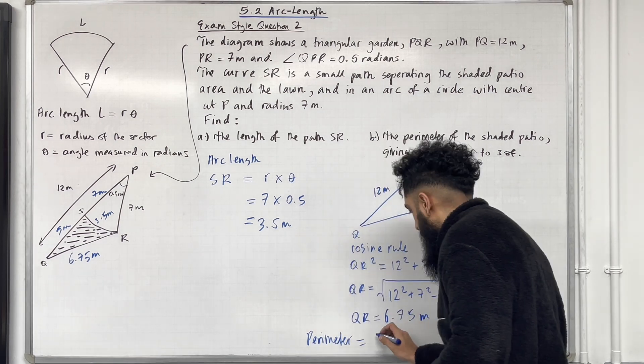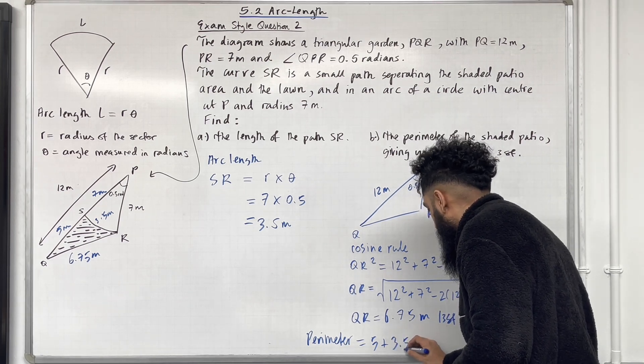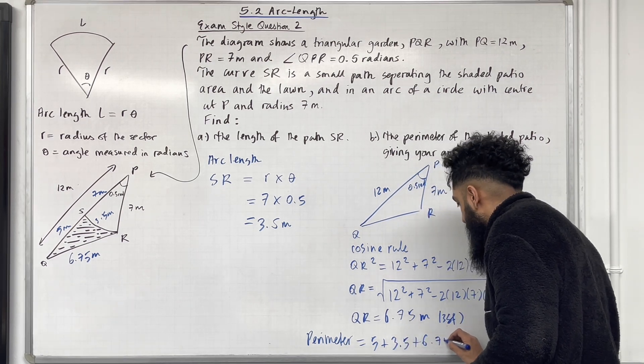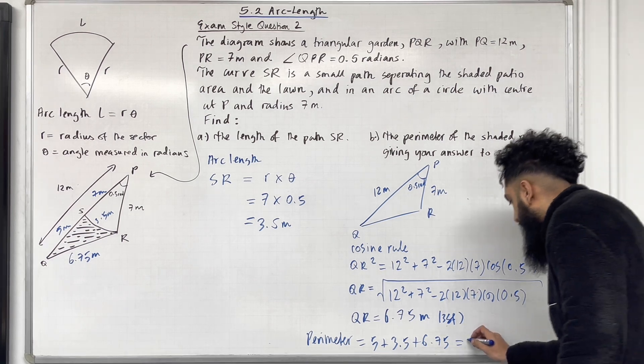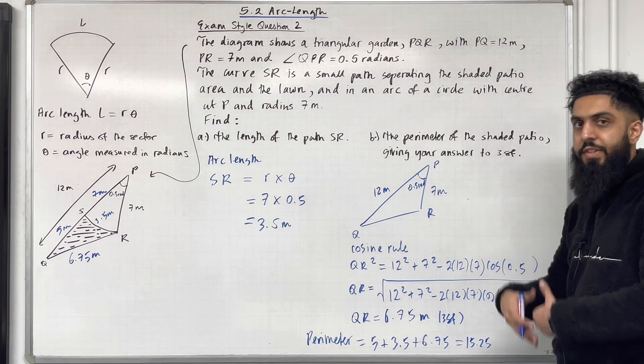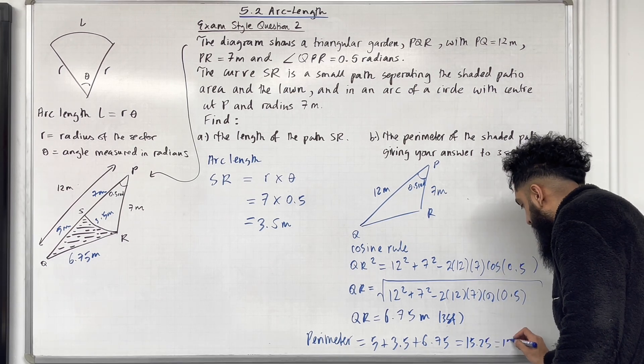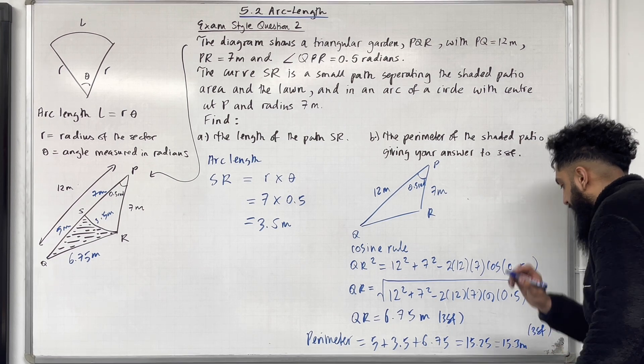Perimeter is equal 5 plus 3.5 plus 6.75. So if I put this into my calculator I get 15.25. We must round this to 3 significant figures, so we get 15.3 metres to 3 significant figures.